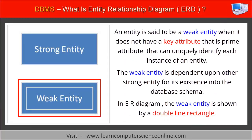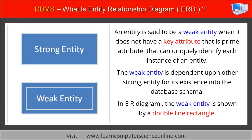The second type is a weak entity. An entity is said to be a weak entity when it does not have a key attribute — that is, a prime attribute — that can uniquely identify each instance of an entity. The weak entity is dependent upon another strong entity for its existence in the database schema. For example, the employee entity is a strong entity, whereas employee address and employee nominee are examples of weak entities because their existence depends upon the employee entity. In an ER diagram, the weak entity is shown by a double-line rectangle.